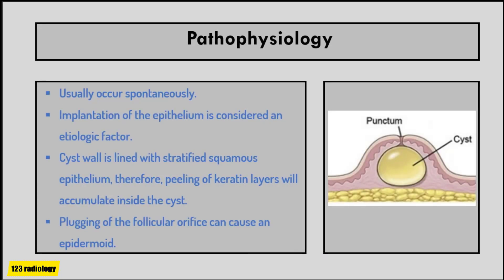Regarding pathophysiology, lesions usually occur spontaneously; however, implantation of the epithelium as a result of injury is considered an etiologic factor — therefore it may also be called epidermal inclusion cyst. Due to surgery or skin disorders, epidermal cells penetrate deep into the skin and multiply. The cyst wall is lined with stratified squamous epithelium, so peeling of keratin layers accumulates inside the cyst. Plugging of the follicular orifice can cause an epidermoid cyst. Generally, epidermal inclusion cyst is a unilocular cyst without septation.